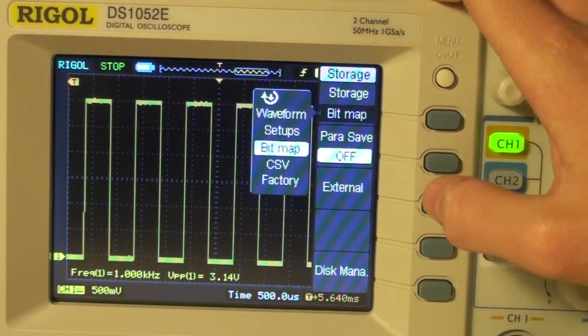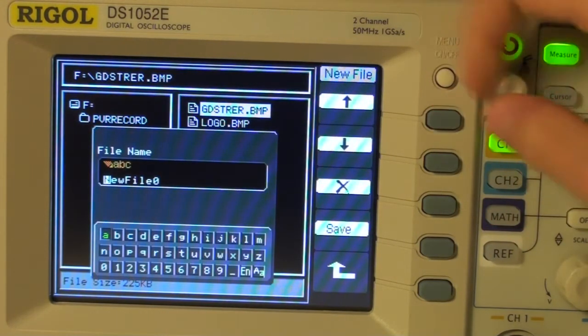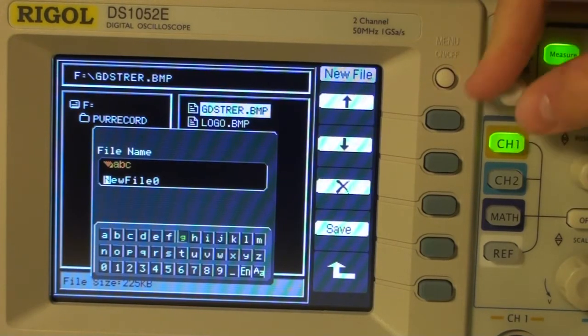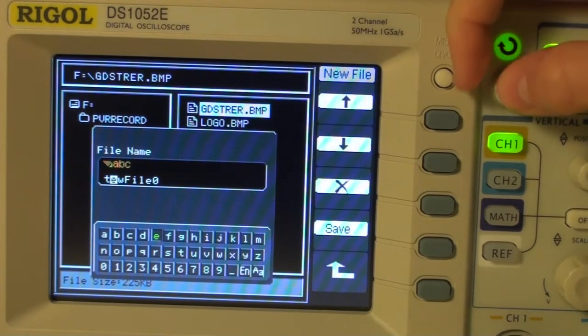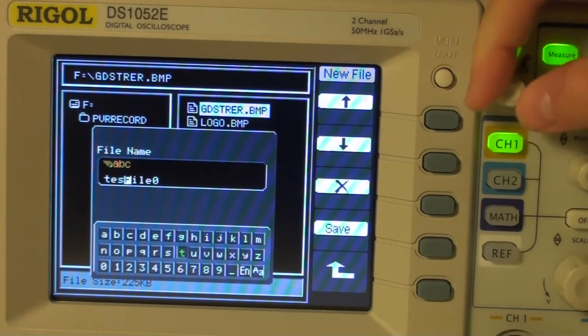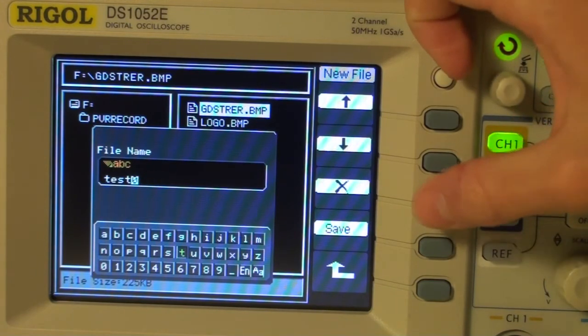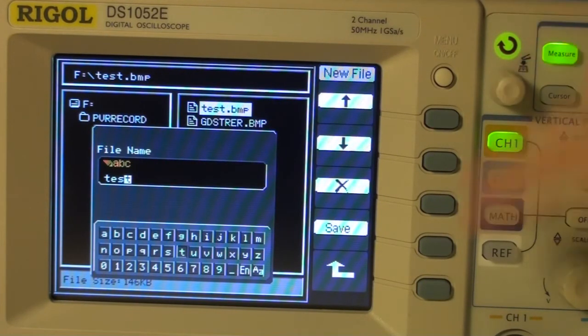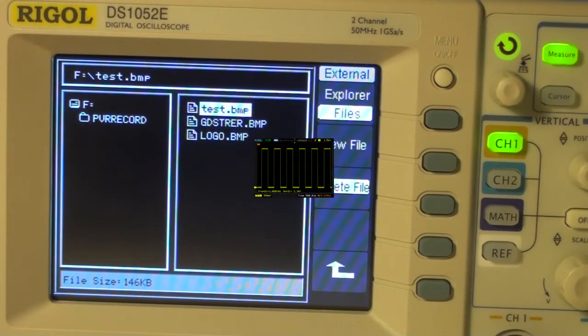So we select bitmap, external, and then we press new file. Then we can enter a filename by using the scroll button. And when we are ready, like that, we press save. Now the image file has been saved, which we can see there, and we can now view the image file on the computer.